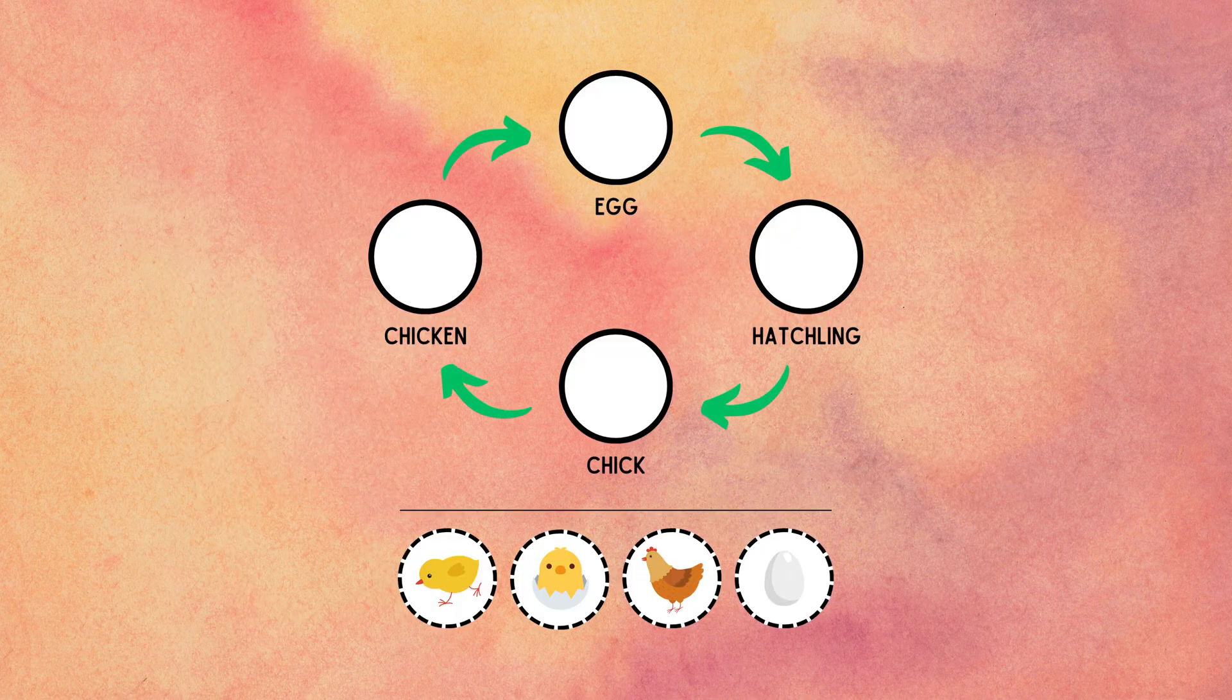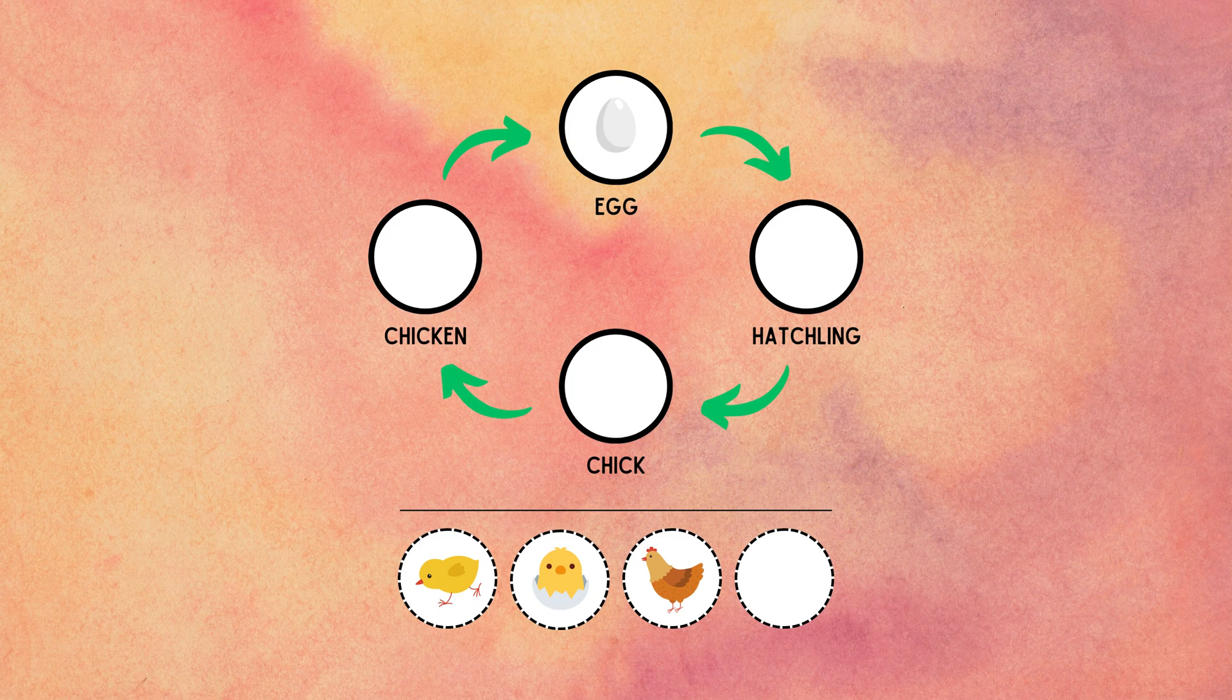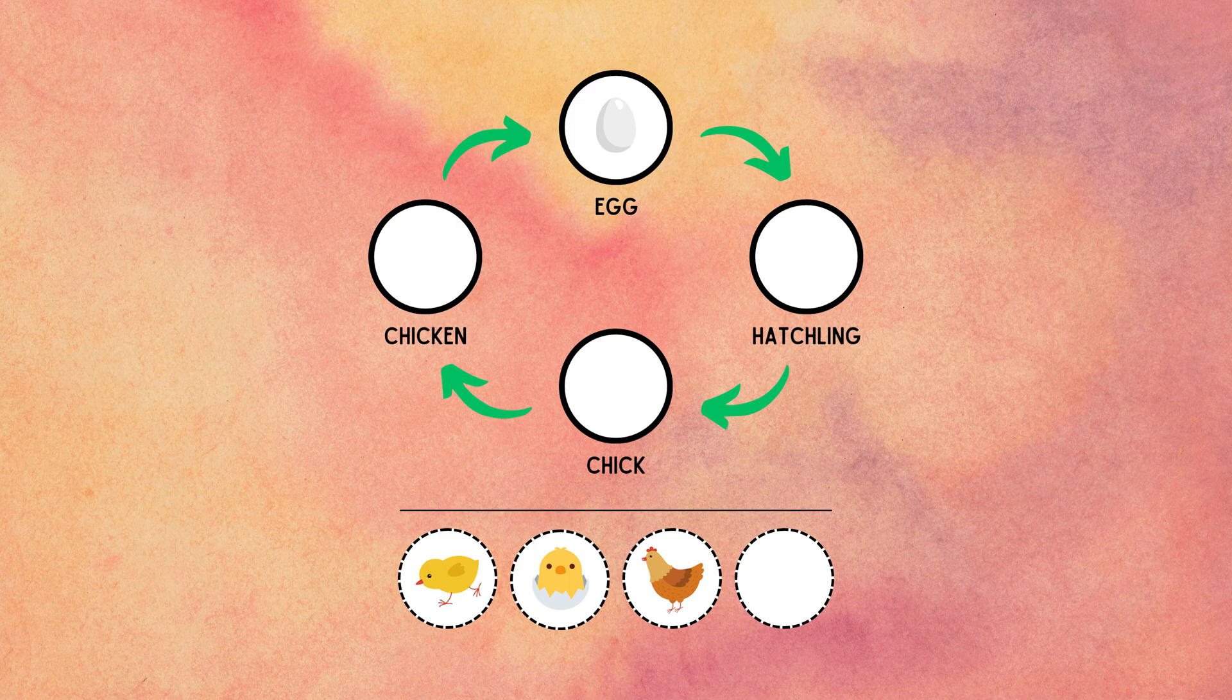The life cycle begins when the hen lays eggs. Fertilized eggs will start developing into embryos. The eggs need to be kept warm and turned regularly to ensure proper development. This is typically done by the hen sitting on the eggs or using artificial incubators. The incubation period usually lasts about 21 days.